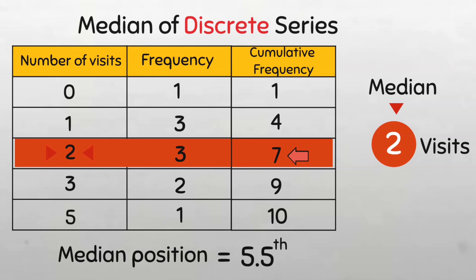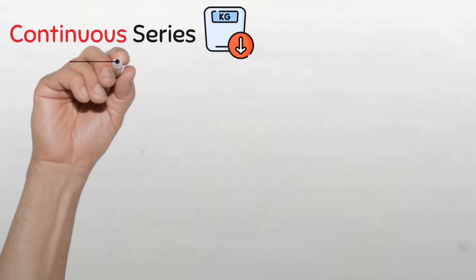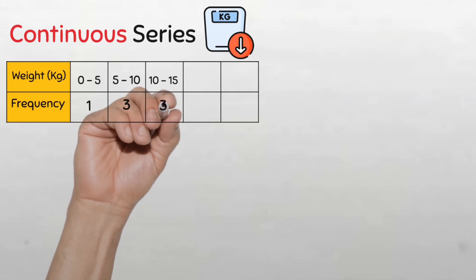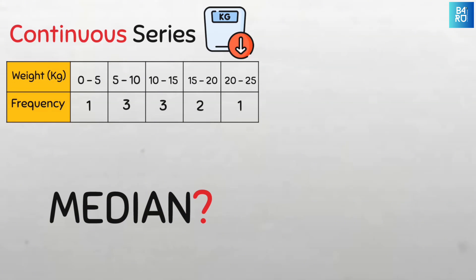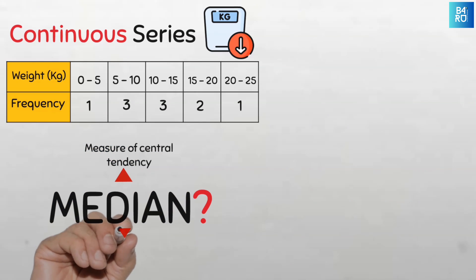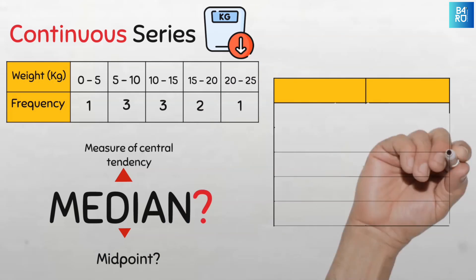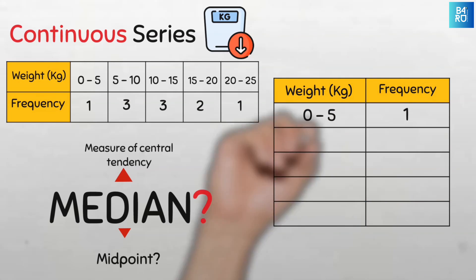Now for the last type of series — the continuous series data. This is a continuous series data on the weight in kilograms of a sample of 10 children attending the nutritional clinic in Nigeria. We know this to be continuous series because the data is grouped and the frequency of each class is provided. Let us modify this table to make it easy for us to compute the median, putting the weights in kg and the frequency in a vertical arrangement.